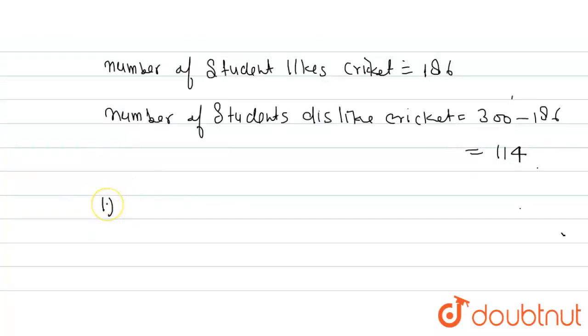So first part: probability of likes cricket equals 186, means number of students who like cricket, which is 186 upon total students 300. And after simplification, it will be 31 upon 50.